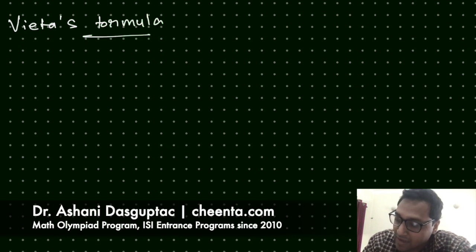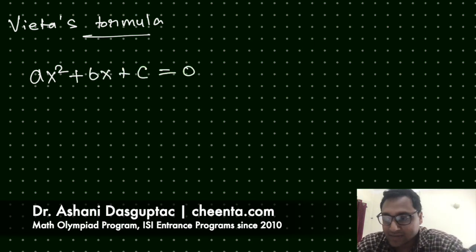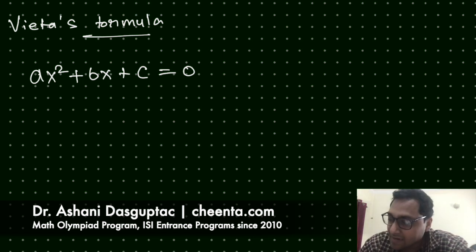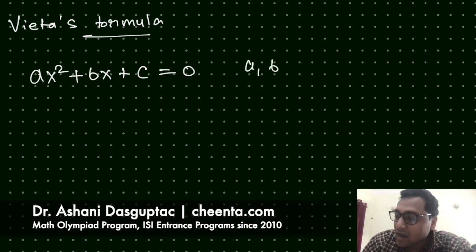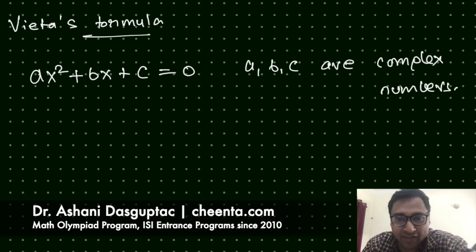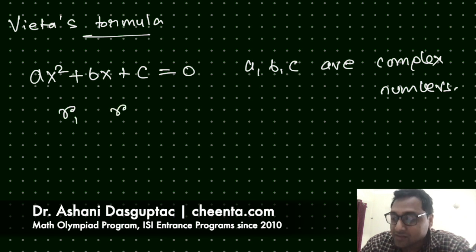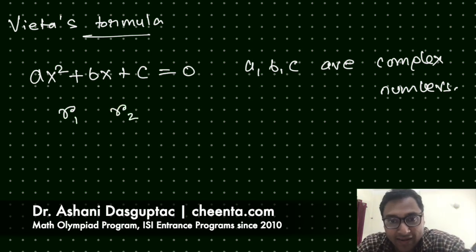So our goal is to find the value of B. Consider a complex coefficient quadratic equation: ax squared plus bx plus c, where a, b, c are complex numbers. Remember, real numbers are also complex numbers, so a, b, c could be real numbers, integers, fractions, or whatever. Suppose r1 and r2 are the roots of this quadratic equation.